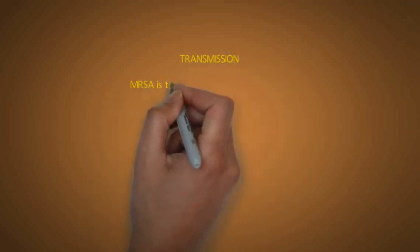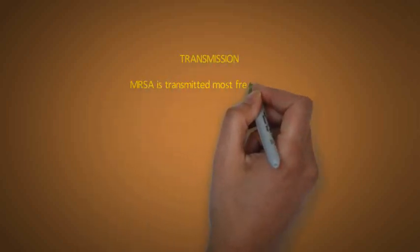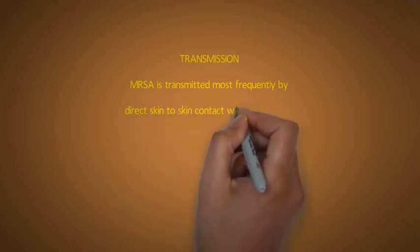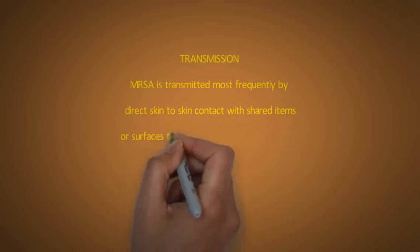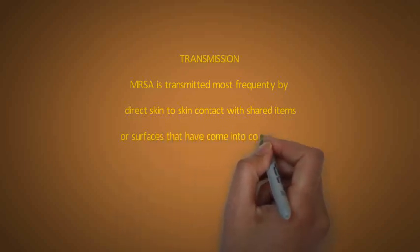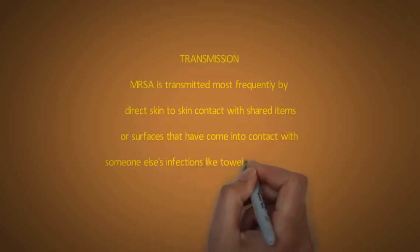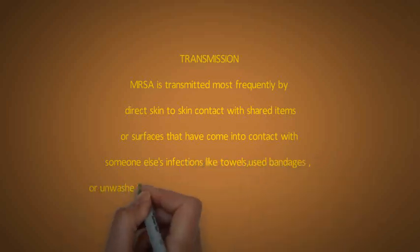MRSA is transmitted most frequently by direct skin-to-skin contact or contact with shared items or surfaces that have come into contact with someone else's infection, like towels, used bandages, or unwashed sheets.